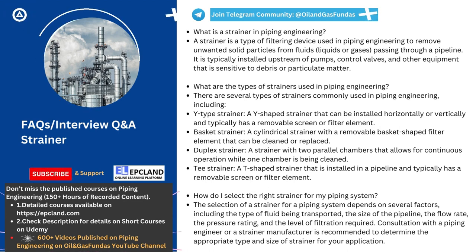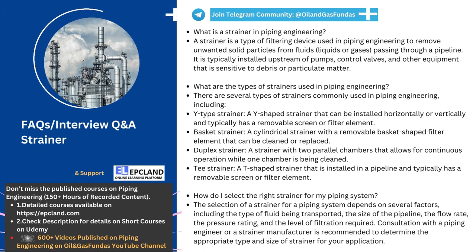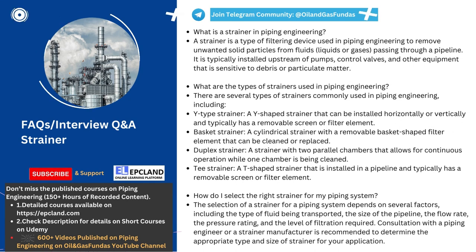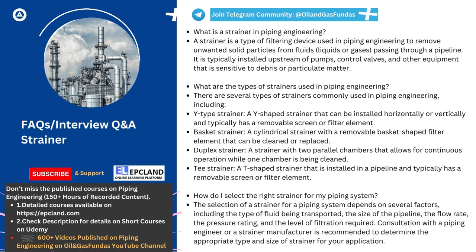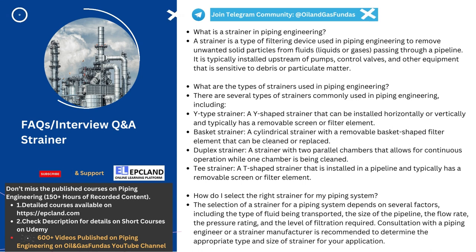The first step in selecting the right strainer is to determine the size of the strainer based on the size of the pipeline. The strainer should be appropriately sized to ensure that it can handle the flow rate of the fluid without creating excessive pressure drop. Next, consider the level of filtration required based on the type of fluid being transported. Different fluids have different particle sizes and shapes, so the strainer mesh or filter element should be selected based on the size of particles that need to be removed. It is also important to consider the pressure rating of the strainer and ensure that it can handle the maximum pressure in the pipeline without failure.